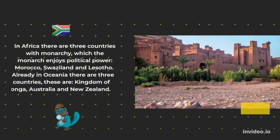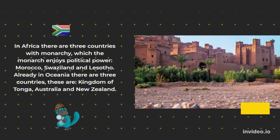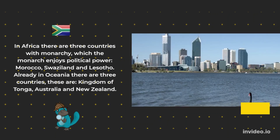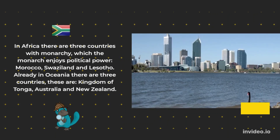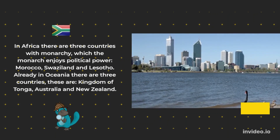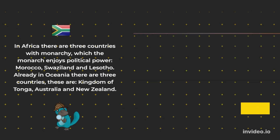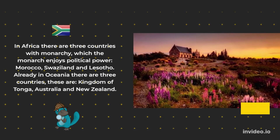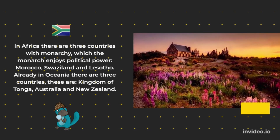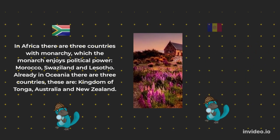In Africa, there are three countries with monarchy where the monarch enjoys political power: Morocco, Swaziland, and Lesotho. In Oceania, there are three countries as well: the Kingdom of Tonga, Australia, and New Zealand.